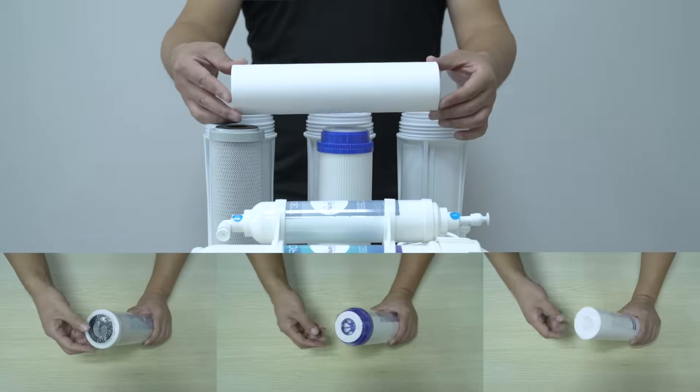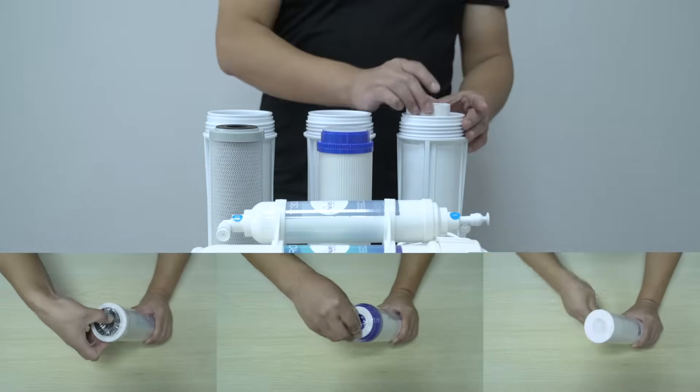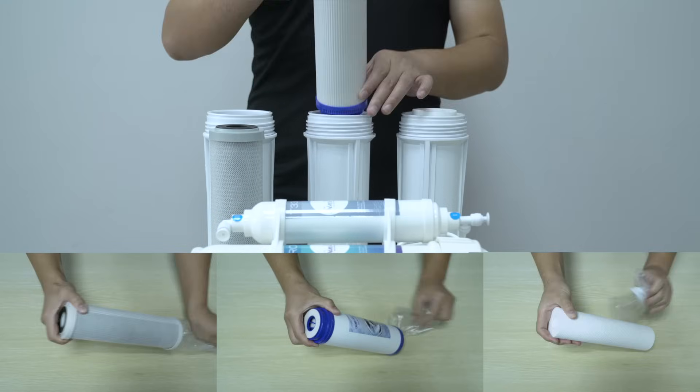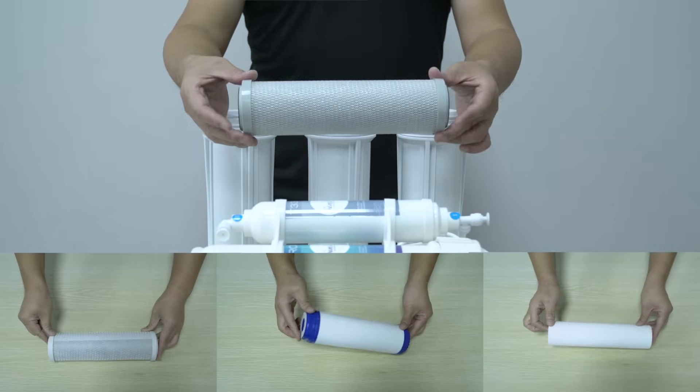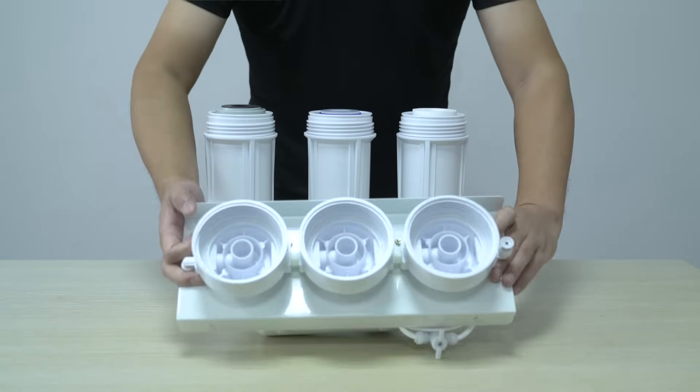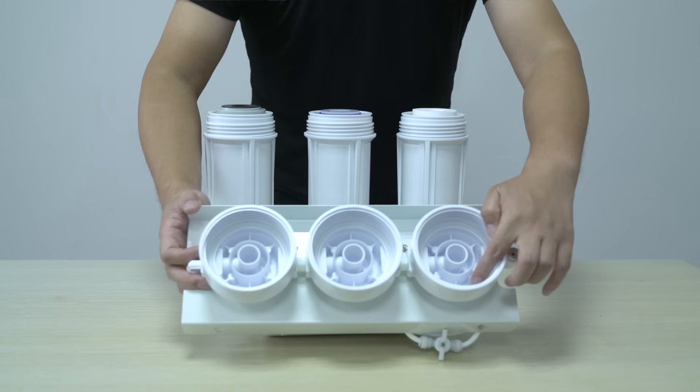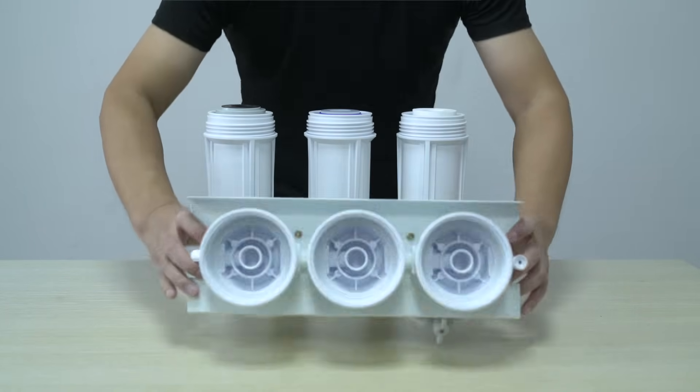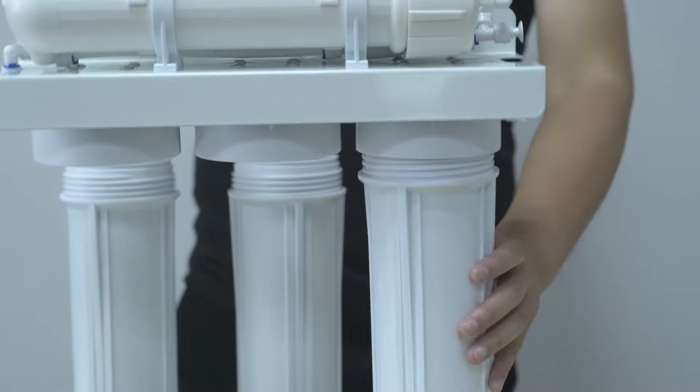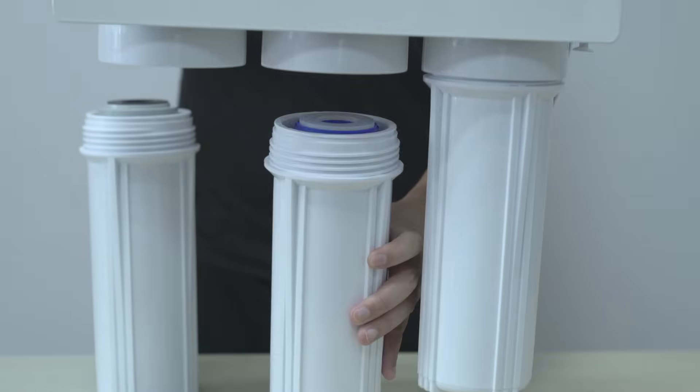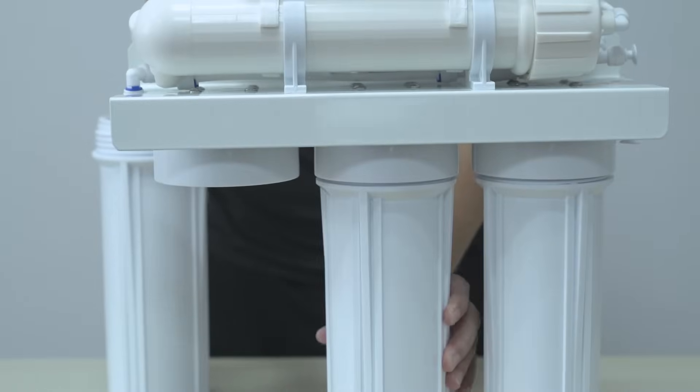Filter cartridges. Install the PP filter in the left-hand filter bowl either way around after removing all the packaging. Next, be very careful when installing the GAC filter into the center position bowl that is the correct way around and all packaging is removed. The sealing gasket must face upwards towards the filter bowl opening. Finally, fit and unpackage the CTO filter either way around into the right filter bowl and hand tighten. Once all filter bowls are in place, tighten all three against the filter head using the filter bowl wrench.